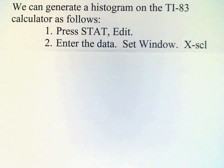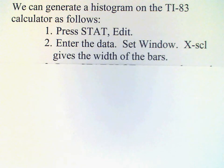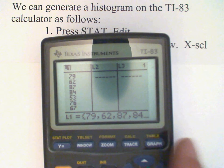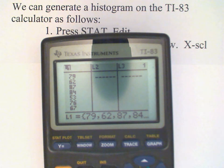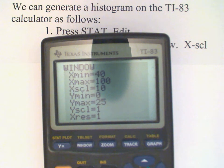Now the next step in generating a histogram is to set the window. That's important if you want your histogram to look right. See this window button here? I'm going to press that. And you want your X min to be smaller than any of your data values. We could use 40. 40 to 100 will work for this data set.